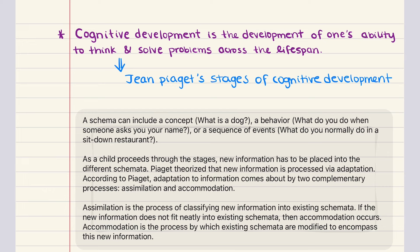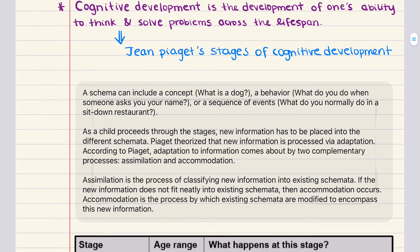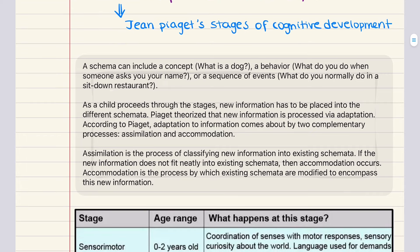Before the actual stages, Piaget explained how learning works. Infants learn mainly through instinctual interaction with the environment — for example, infants possess a grasping reflex, and through experience they learn it's possible to grasp objects. Piaget referred to these organized patterns of behavior and thought as schematas. A schema can include a concept like what is a dog, a behavior like what to do when someone asks your name, or a sequence of events like what you normally do in a sit-down restaurant. As a child proceeds through the stages, new information must be placed into different schematas.